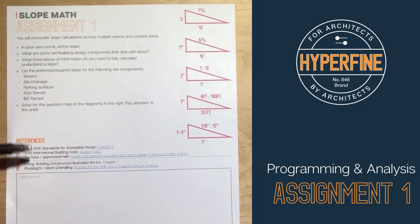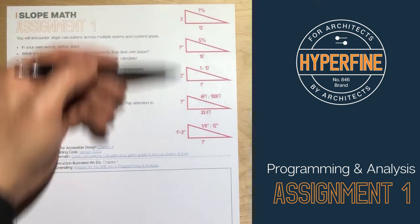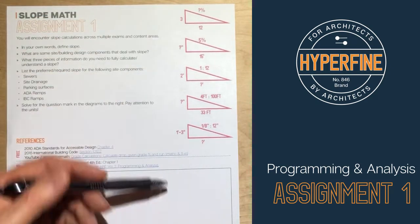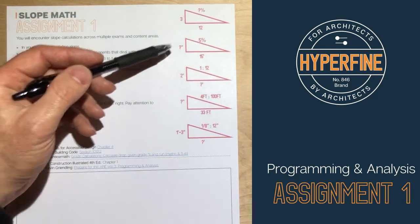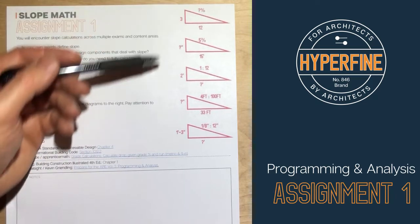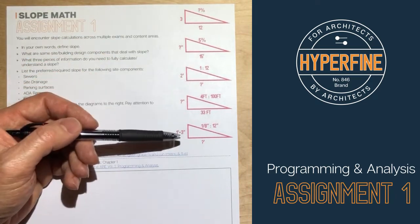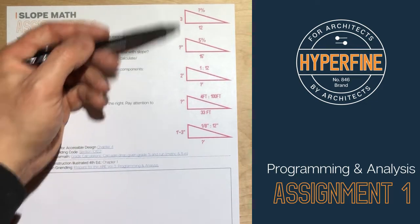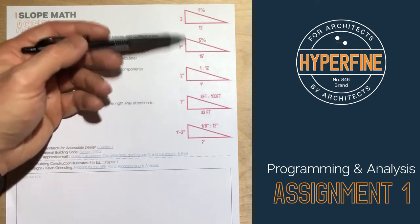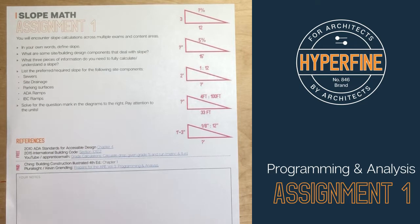So in this assignment, we've got some general thought exercises like define slope. What are some building, you know, site components that deal with slope? You can read those in the answers. I'm just going to, in this video, cover basically the math of all these. So you get five different slopes with sort of different information given. Some of them are percentages, some are a ratio, some are feet. And then you're asked to solve for the missing part. So I'm going to go through one by one and how you would solve each of these slopes and sort of what the process is and what the information is.